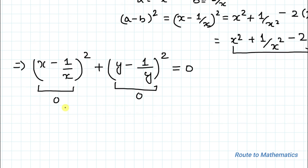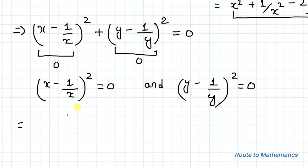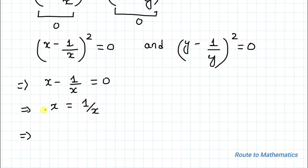So we equate both terms with 0. We have (x - 1/x)² = 0. Taking the square root, x - 1/x = 0, which gives x = 1/x. Cross multiplying, x² = 1.